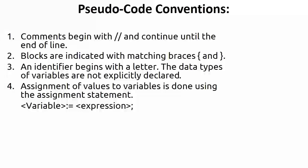Assignment of values to variables is done using the assignment statement. On the left side you have only one variable, and the expression value is assigned to it. The assignment operator is colon-equals (:=), not a simple equals sign. For example, 'c := a + b' assigns the value of a+b to c, and 'sample := s1' assigns the value of s1 to sample.